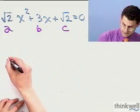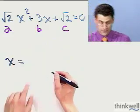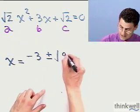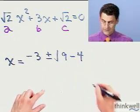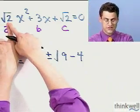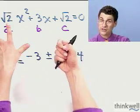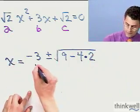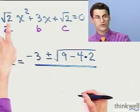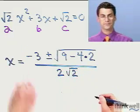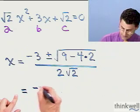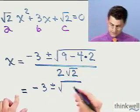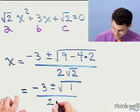So I have x equals negative b, so that's negative 3, plus or minus the square root of b squared, so I square 3 and I get 9, minus 4 times ac. That's going to be times the square root of 2 times the square root of 2. The square root of 2 times the square root of 2 is just 2. So times 2, all divided by 2a, or 2 square root of 2.